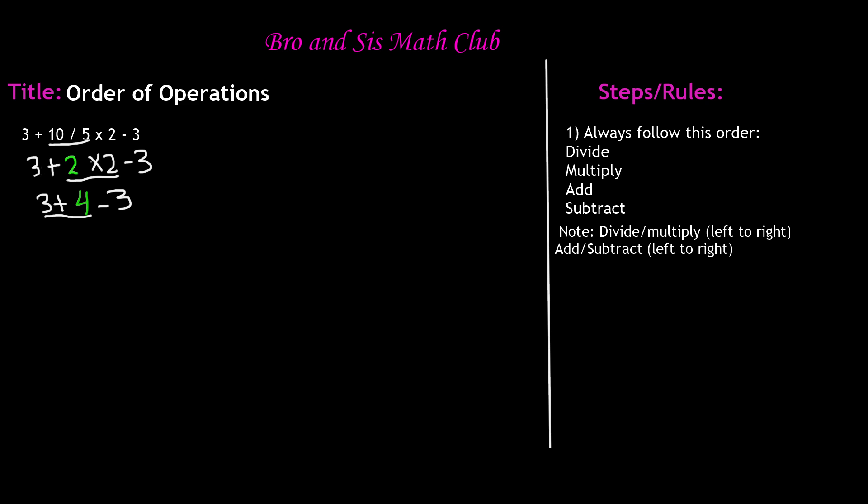So we'll write 7, and then keep the minus 3 the same. And since this is the last operation, and this is subtraction, we'll go ahead and subtract. So 7 minus 3 is equal to 4.